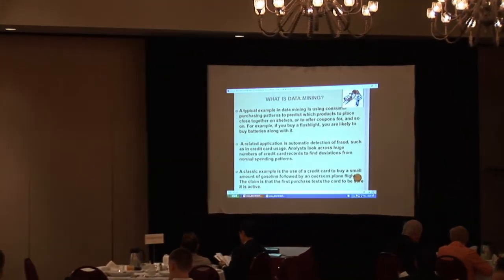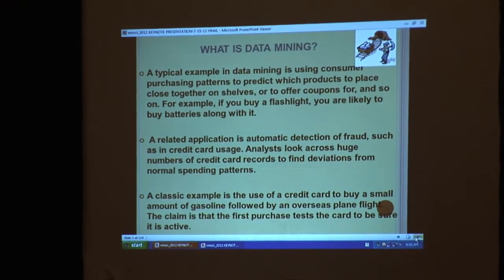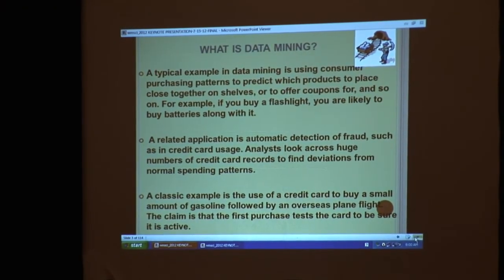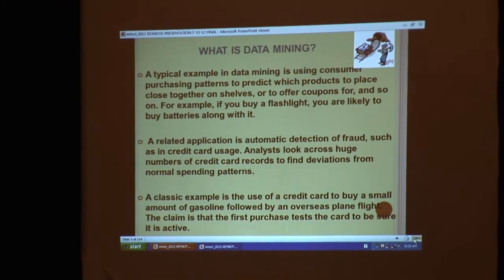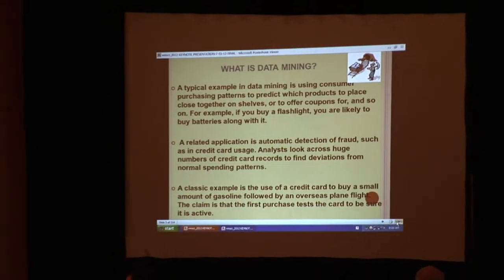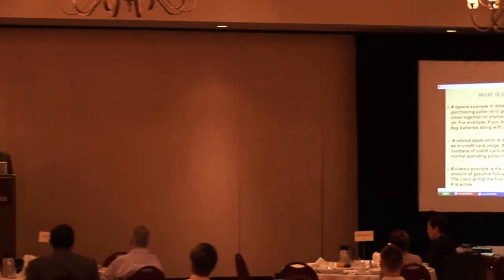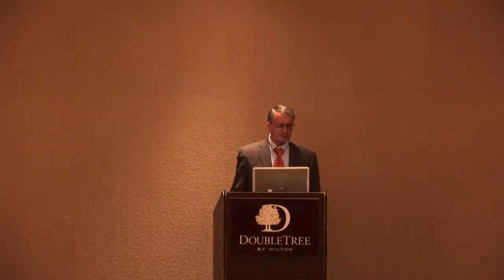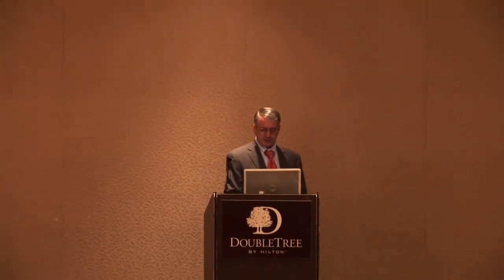A typical example in data mining is using customer purchasing patterns to predict what products they purchase and where they're placed in the store. Bread and milk are obviously placed at distant locations, but things that are associated with each other could be located close together, like flashlights and batteries. A classic example is the beer and diaper example, where the beer display is moved next to the diapers on Thursday or Friday nights when husbands go out to purchase beers. A related application is automatic detection of fraud, such as in credit card usage — analysts look across huge numbers of records to find deviations from normal spending patterns. Another example is using a credit card to buy a small amount of gasoline followed by an overseas plane flight, where the first purchase tests the card to make sure it's active.